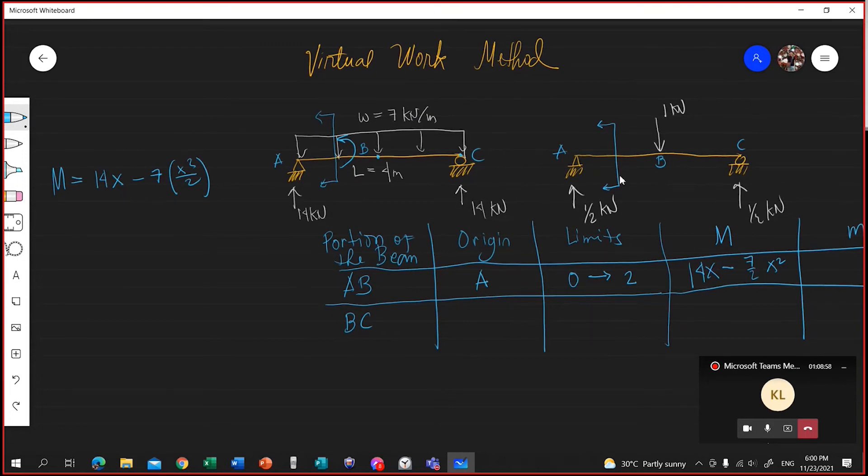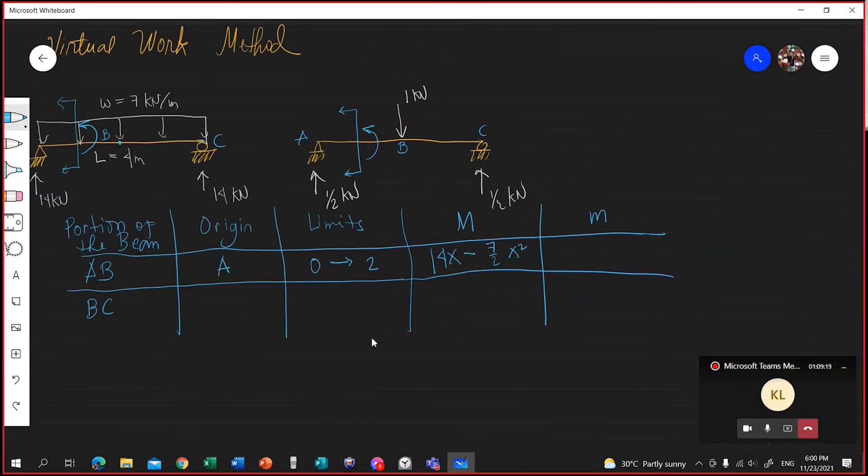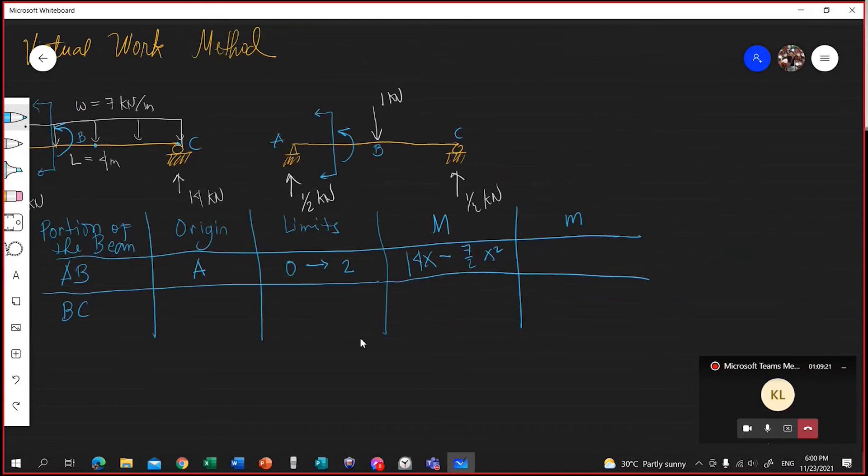Taking this segment right here, the m, small letter m, will be, take note again that the direction of the moment is counterclockwise for positive, so this will be 1 half times X or X over 2. X over 2. That's your small letter m.